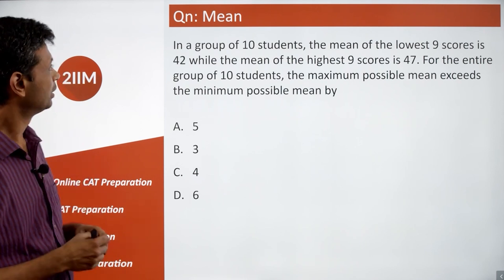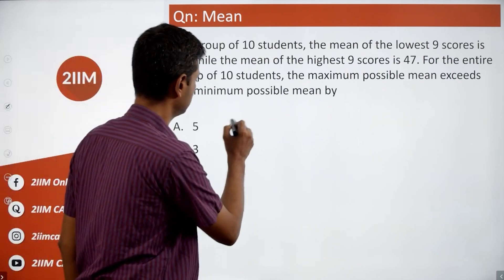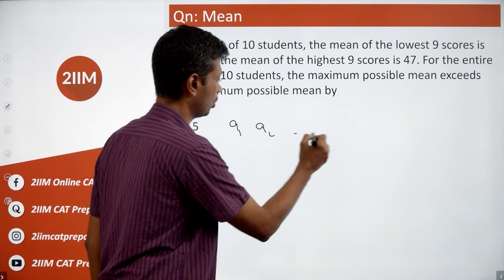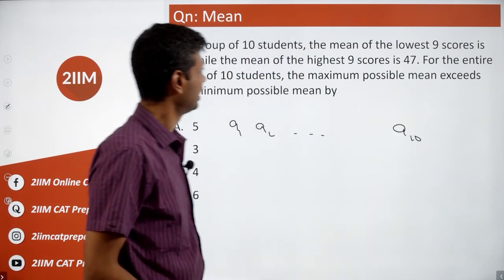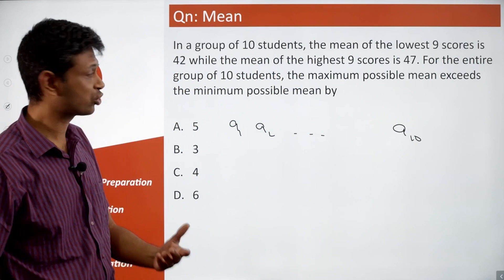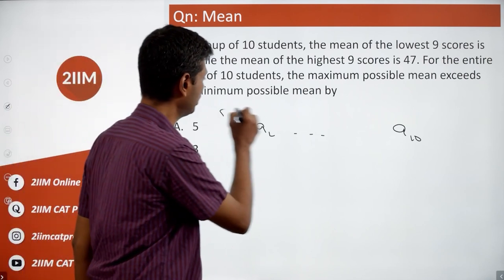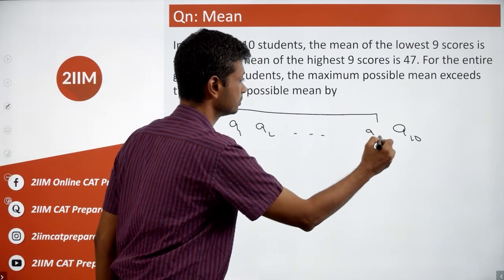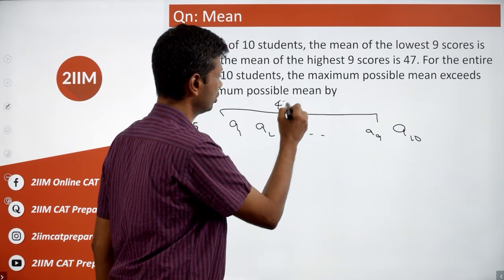So we have 10 students: a1, a2, all the way to a10. The mean of the lowest 9 scores is 42, so the sum of a1 to a9 is 42 times 9.